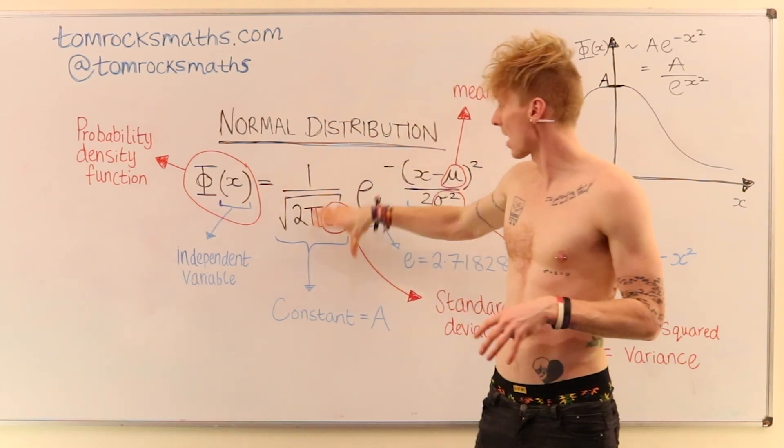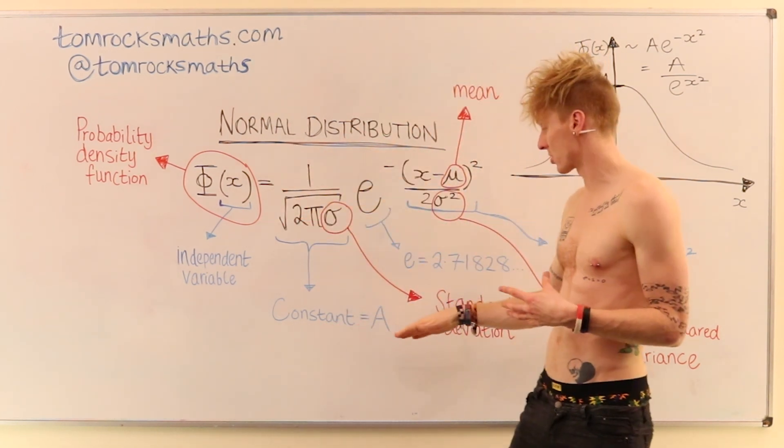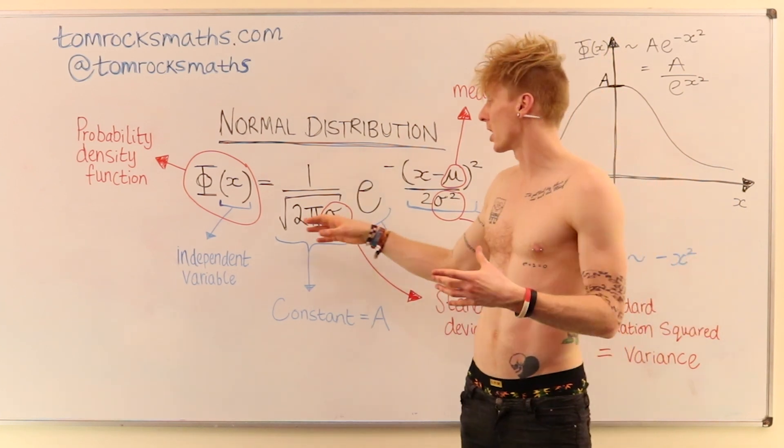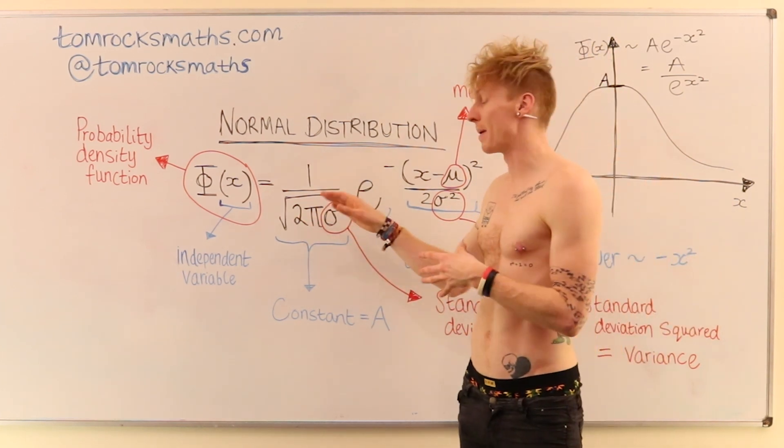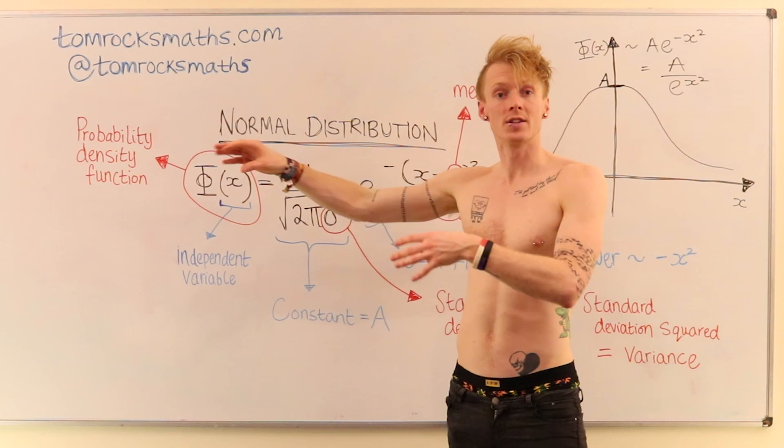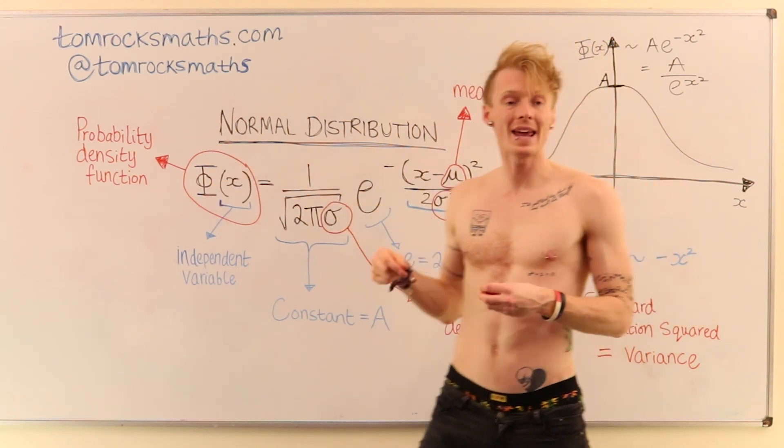Moving to the right-hand side, we have this constant, which before we just called A. And this is made up of the number 2, the number pi, 3.14 dot dot dot, and sigma.